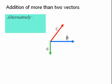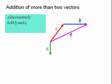Here we start by adding B and C. Again moving B so that its tail joins the head of C. This gives us the resultant of these two, which we shall call E.